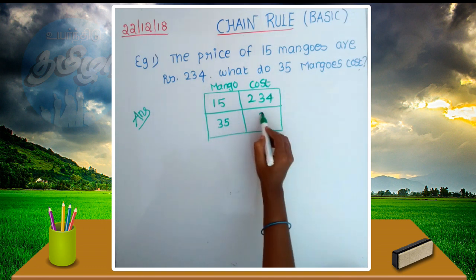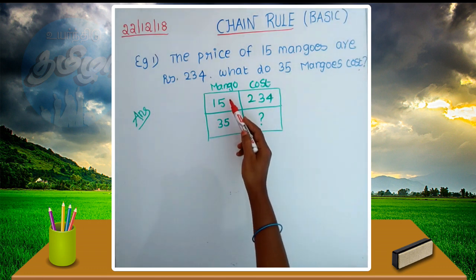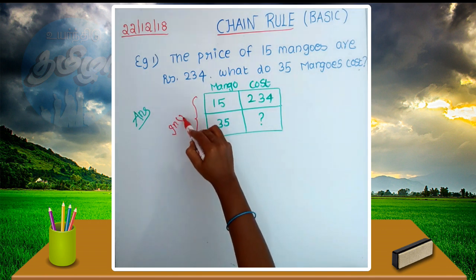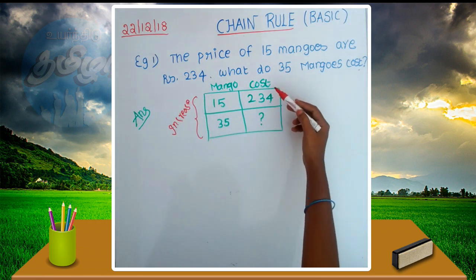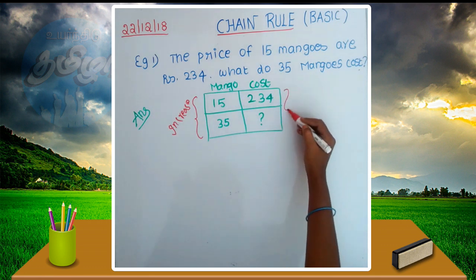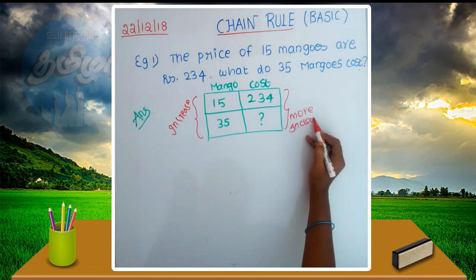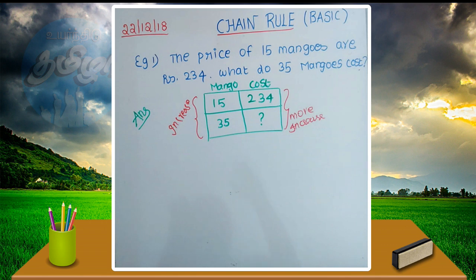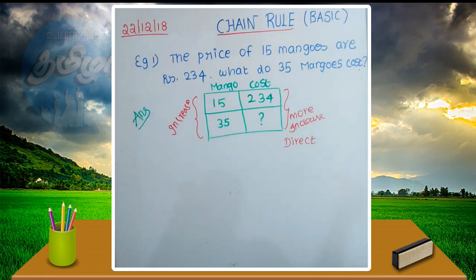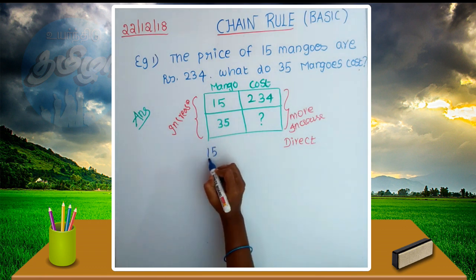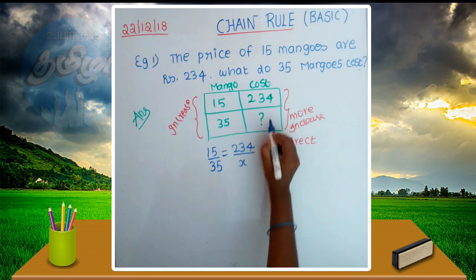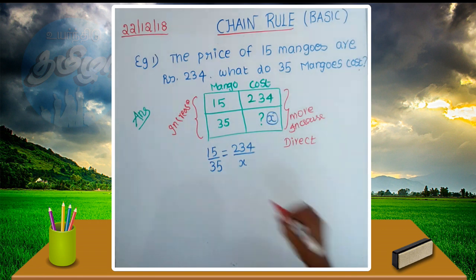Now we are looking at the quantity of this mango. 15 mangos cost 234, so if 35 mangos — the cost increases. If you look at the cost and quantity, what do we say? That is a direct proportion. Here we say the numbers: 15 divided by 35 is equal to 234 divided by x.